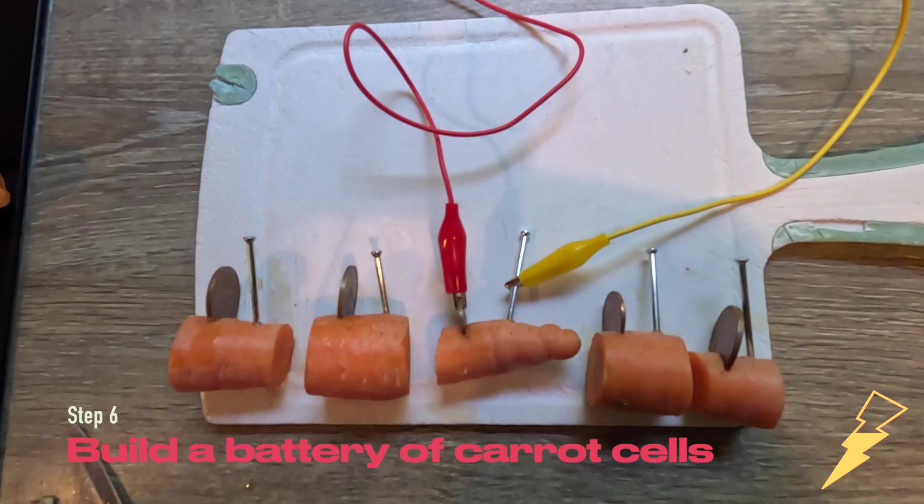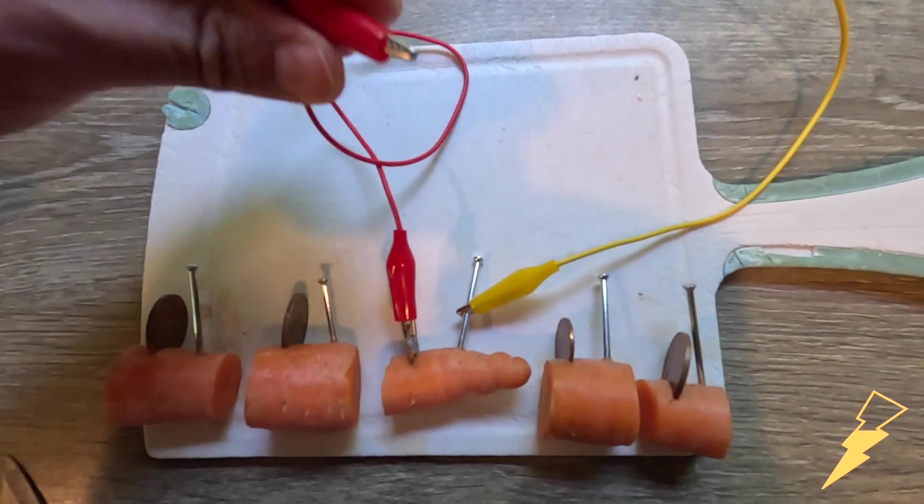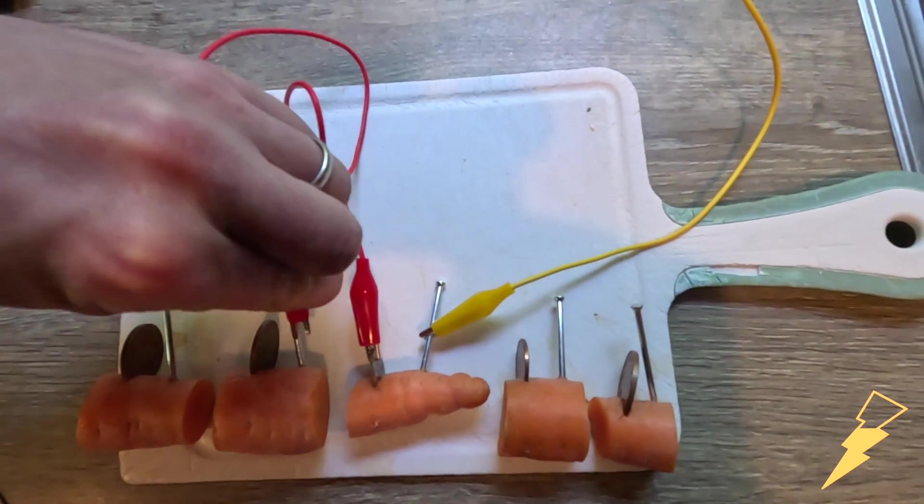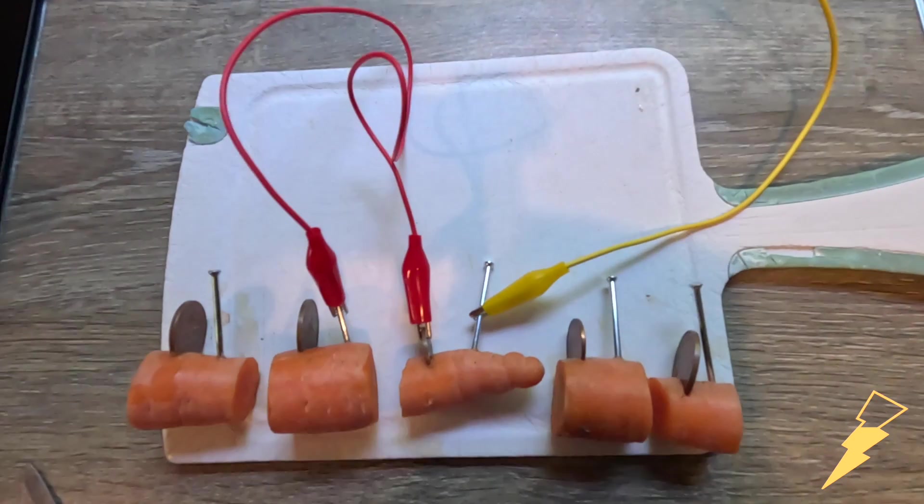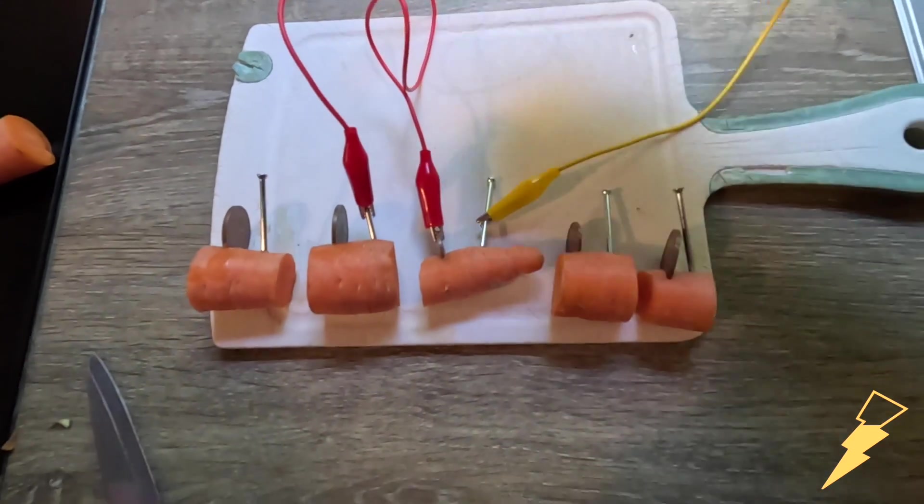We've made another four carrot cells. We've got five in total and each cell is made of a piece of carrot, a copper coin, and a zinc nail. What we need to do is connect them all together, so you connect the copper coin on one carrot cell to the zinc nail on the other. We keep on doing this until they're all connected.